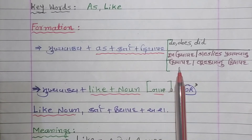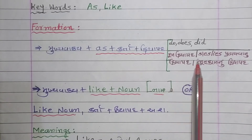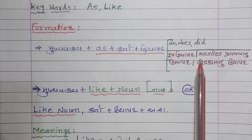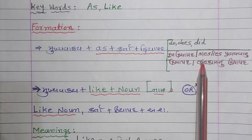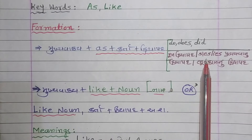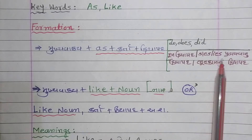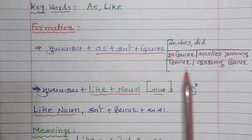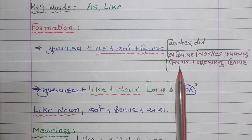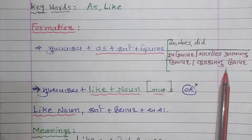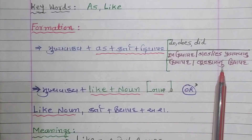મૂળ ક્રિયા પદ, અથવા -s/-es/-ies પ્રત્યયવાળું ક્રિયા પદ, અથવા ભૂતકાળનું ક્રિયા પદ. સાદા વર્તમાનકાળ માં, ત્રીજા પુરૂષ એક વચન માં, -s, -es, કે -ies પ્રત્યયવાળું ક્રિયા પદ મૂકવામાં આવે છે.